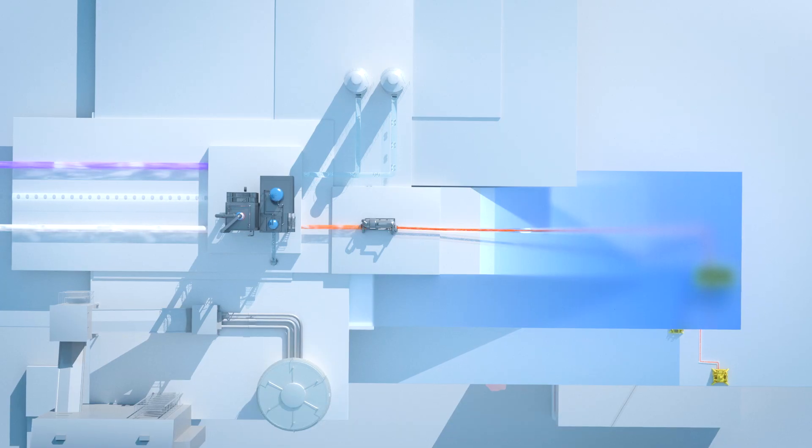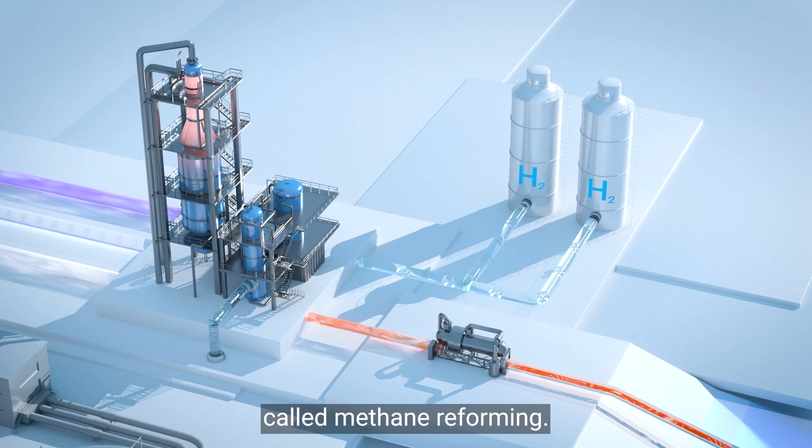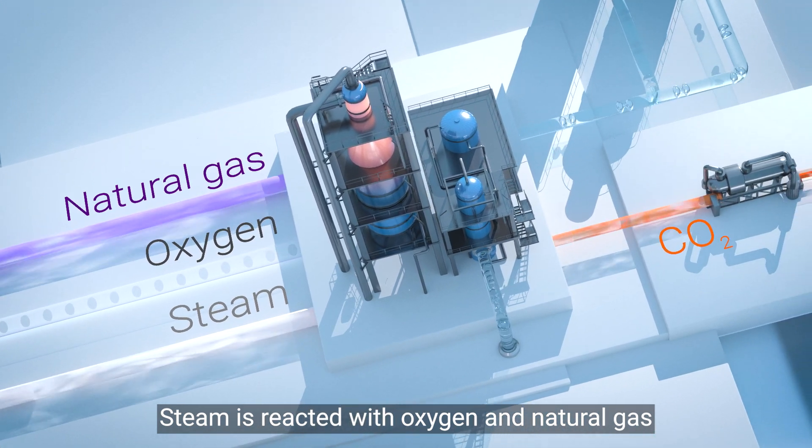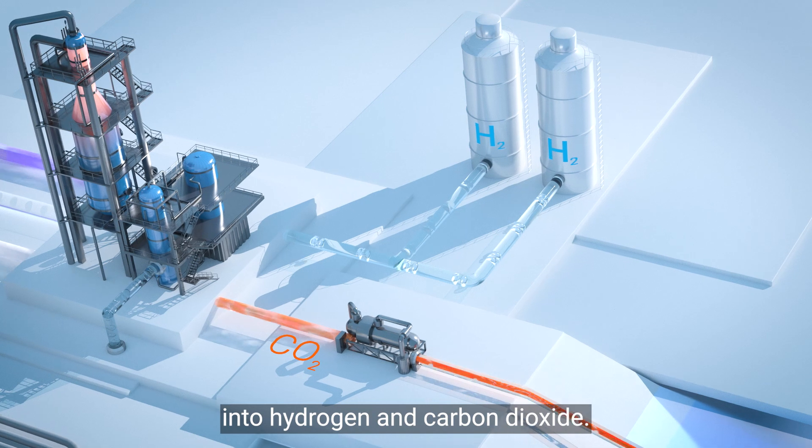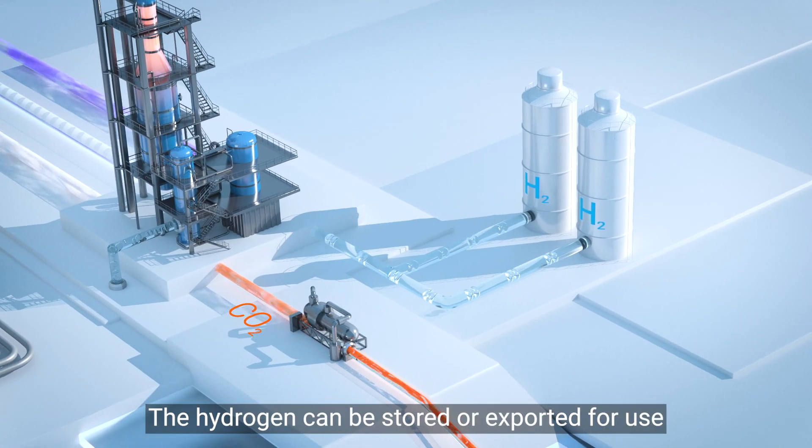Blue hydrogen is made by a process called methane reforming. Steam is reacted with oxygen and natural gas at high heat, transforming this hydrocarbon into hydrogen and carbon dioxide. The hydrogen can be stored or exported for use.